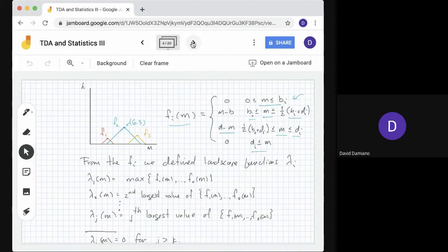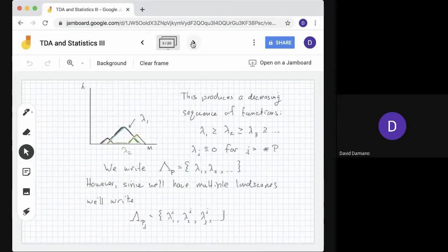We use these peak functions fi to define landscape functions λi. For each value of f1(M) up to fK(M), the first landscape function λ1 is the maximum of the values, λ2(M) is the second largest value, and the jth one is the jth largest value of f1(M) up to fK(M). For j > K, λj = 0 identically.